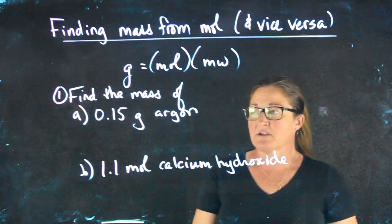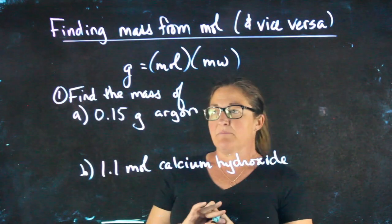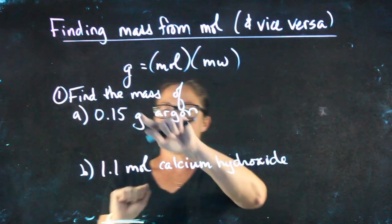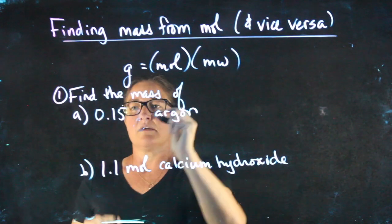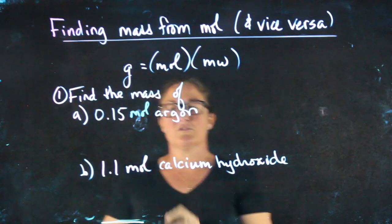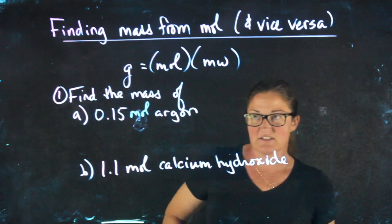Okay, we're ready for some practice problems. Here are some examples where I say find the mass of 0.15 moles of argon, or 1.1 moles of calcium hydroxide.